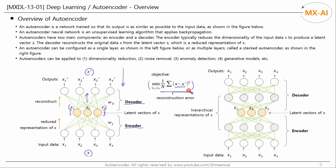The reconstruction error can be simply measured by the mean squared error. An autoencoder can be configured as a single layer or as multiple layers, called a stacked autoencoder. Stacked autoencoders allow the network to learn hierarchical representations of the input data X, with each layer capturing more complex features.